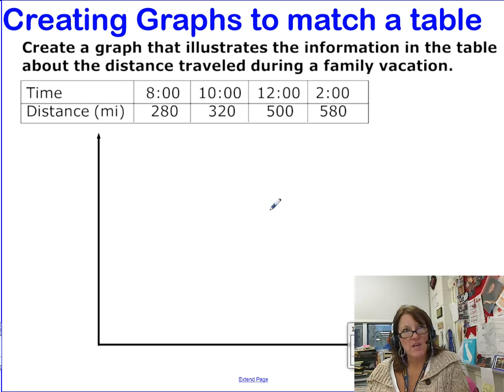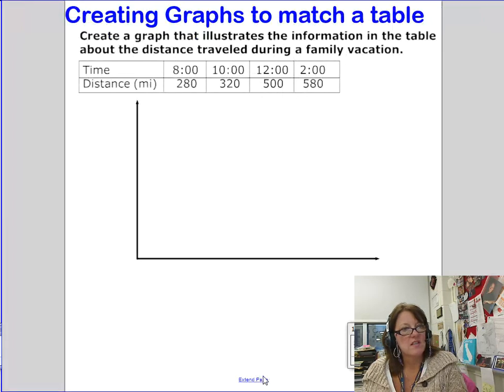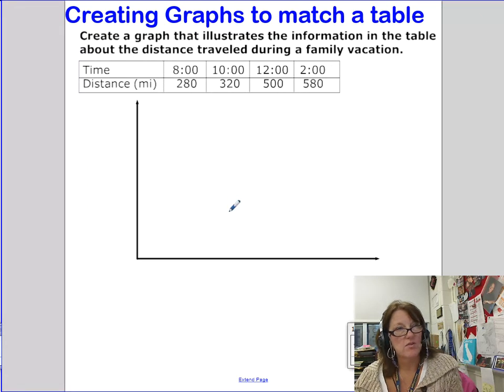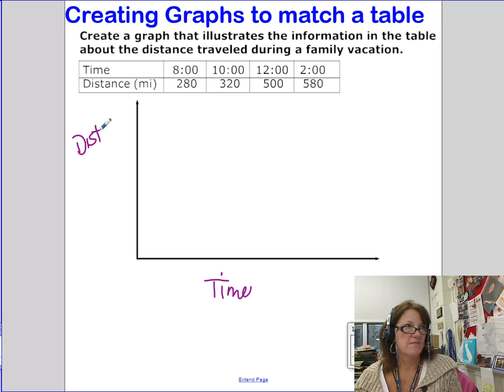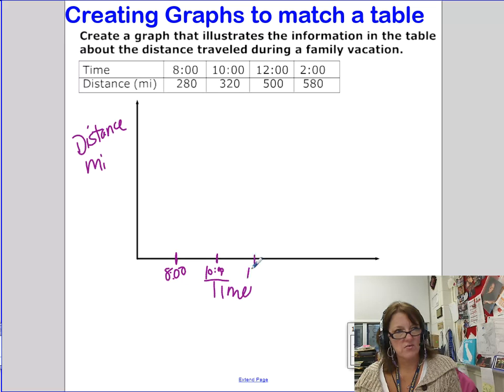Last but not least, we need to create a graph that will match the table. It says create a graph that illustrates the information on this table about the distance traveled during a family vacation. So here's the table. What I want you to do is draw two axes here, a horizontal and a vertical one, and we need to label these. Time I'm going to put on the horizontal, and then distance in miles is how we're going to label the vertical one. Now, the time elapses from 8 o'clock to 2 o'clock. So I'm not going to start directly at zero, but these are equally spaced intervals. It goes two hours, two hours, two hours. So let's make a hash mark, call this 8 o'clock, come down here call this 10 o'clock, let's call this noon or 12 o'clock, and then over here 2 o'clock.